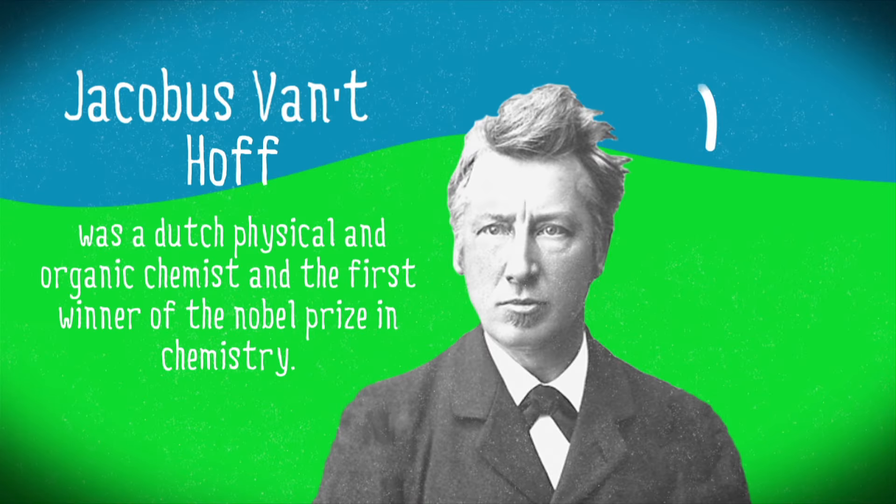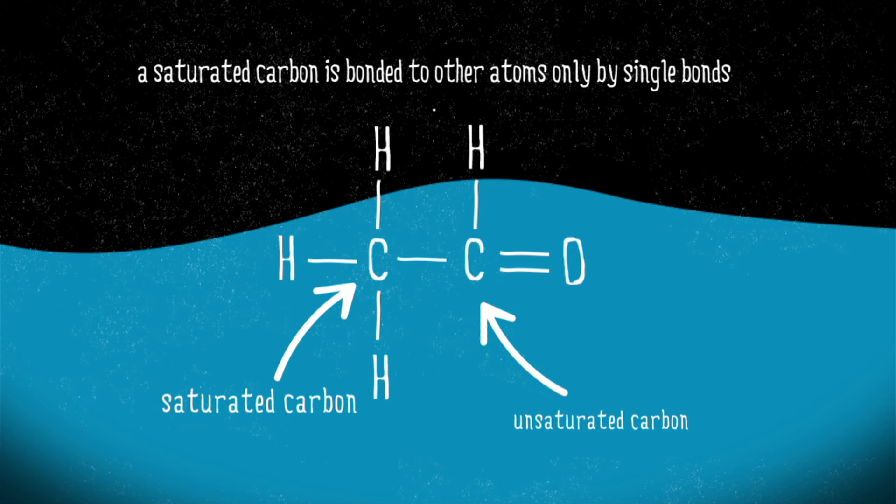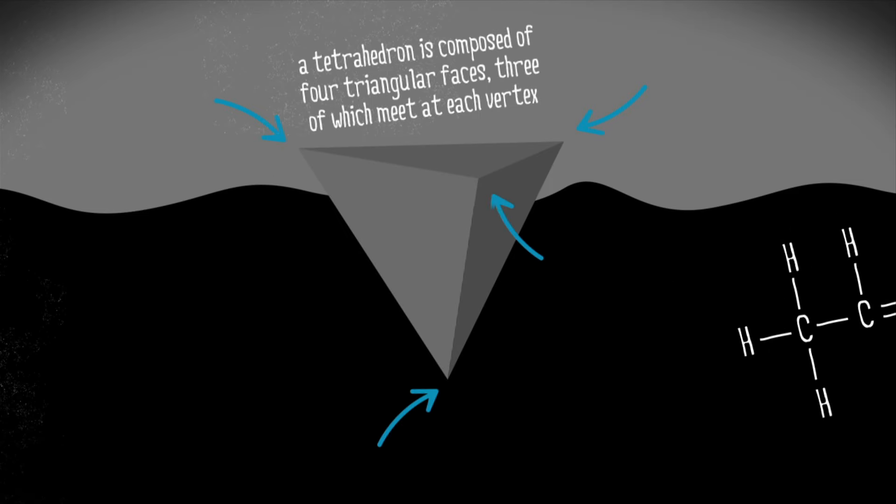In 1874, the chemist Van't Hoff published a remarkable hypothesis. The four bonds of a saturated carbon atom point to the corners of a tetrahedron.